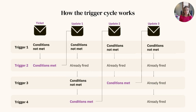If a trigger updates a ticket during the cycle, the cycle starts over. All of your triggers will run again except any triggers that have already fired and updated the ticket. This means a ticket could loop through the trigger list several times before all of the triggers have either updated the ticket or have been skipped because conditions were not met.